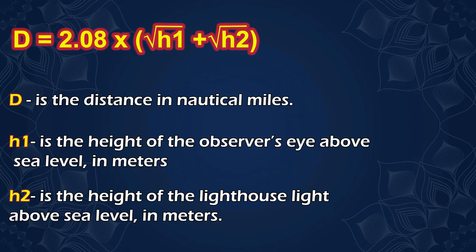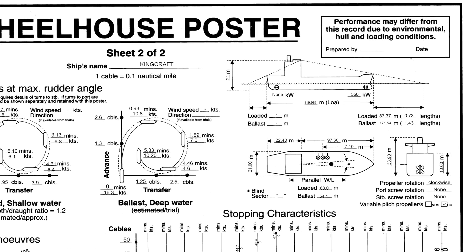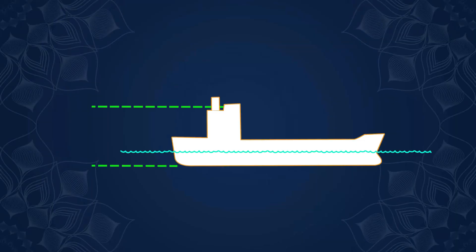Now, how do you determine the height of the observer's eye? Check the wheelhouse poster. Find the height from the keel to the bridge, then subtract the draft. The result will give you the observer's eye height. For example, if the height from the keel to the bridge is 21 meters and the draft is 5 meters, the observer's eye height will be 16 meters.